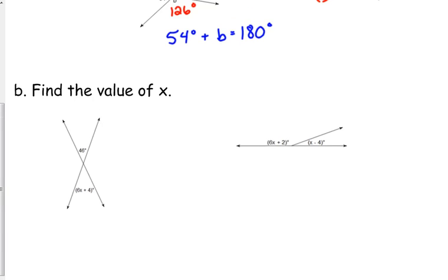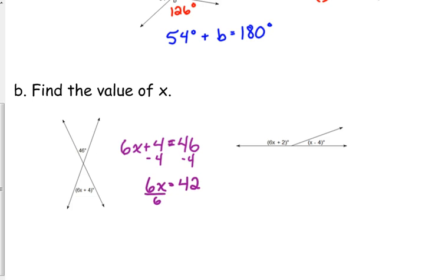Let's make it a little more difficult and throw some variables in there. Same premise: vertical angles are equal to each other, but now we solve an equation. 6x plus 4 equals 46. First, subtract 4: 6x equals 42, then divide by 6, so x equals 7. Note that 7 is not the measurement of the angle — the whole angle is 46 degrees — we just want to find the value of x.